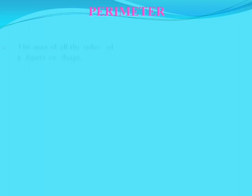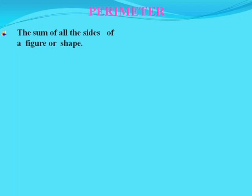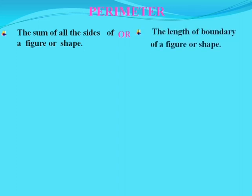First we should know what is perimeter. The sum of all sides of a figure or shape is called perimeter. Or we can say the length of boundary of a figure or shape is called perimeter.